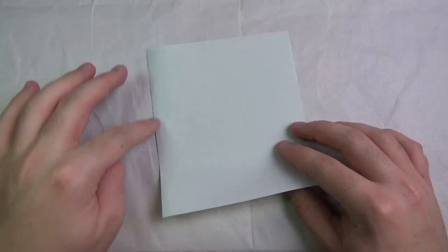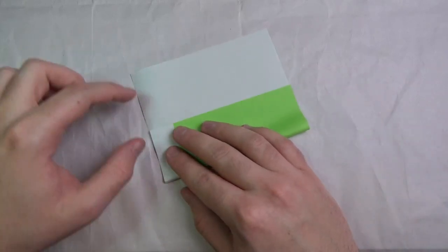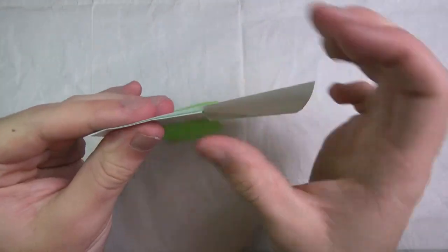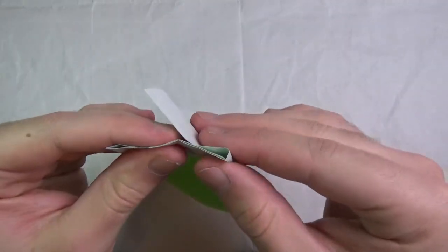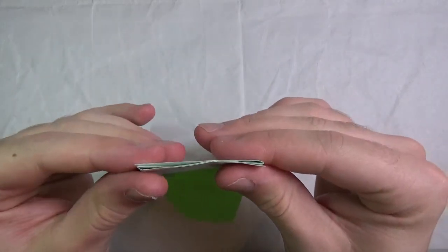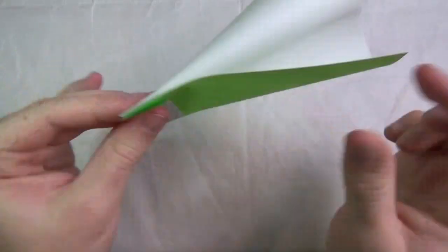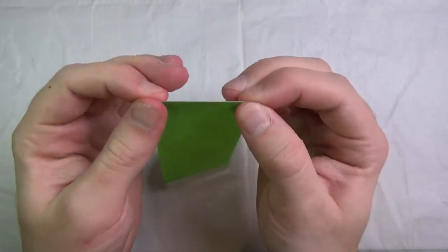Now comes a tricky step. We're going to divide this into thirds. So we're going to fold this up so that this is equal to that. So just eyeball it. And then take this and fold it behind and just fiddle with the folds until they align. See? Just like that. And repeat on this side. Like that.